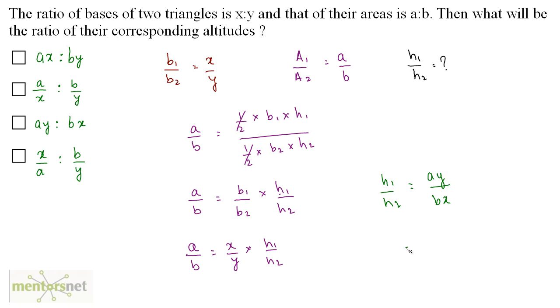So the ratio of their altitudes is Ay to Bx. Option C is the correct answer.